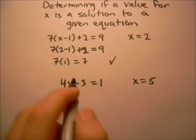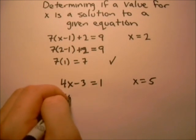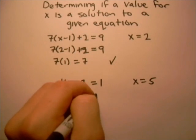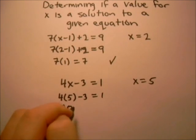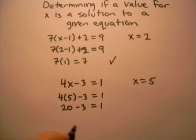Well, again, we'll just plug in 5 for x, so we've got 4 times 5 minus 3 equals 1. Well, 4 times 5 is 20, minus 3 equals 1, and 20 minus 3 is 17.